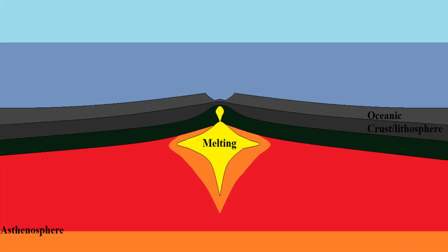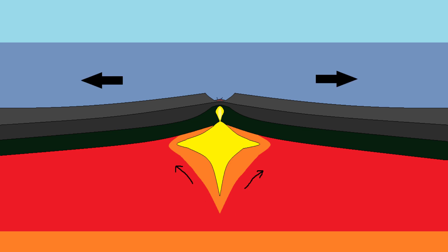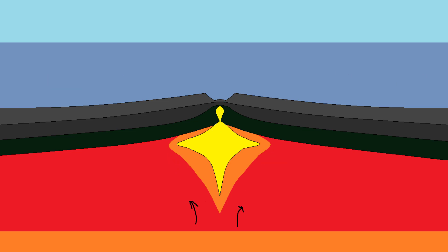So first, let's look at divergent plate boundaries. Divergent plate boundaries are where the crust is basically being split in two. This causes mantle upwelling, which then rises up towards the crust and causes partial melting. The melt, or magma, eventually reaches the surface, creating new crust.